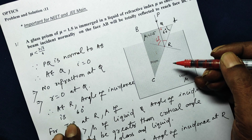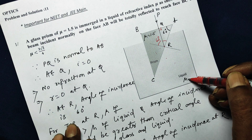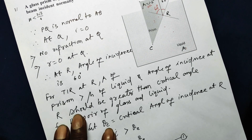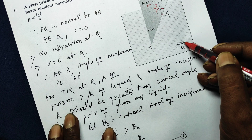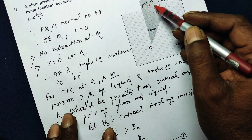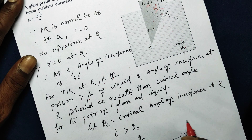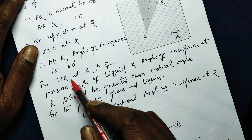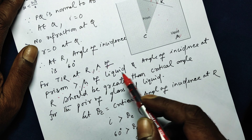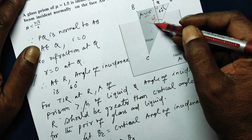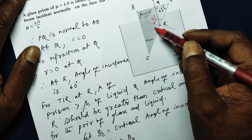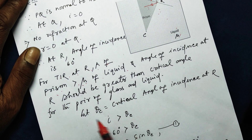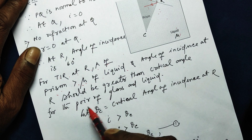Total internal reflection takes place when light goes from a denser medium to a rarer medium. Therefore the value of μ of the liquid should be less than 1.5. For TIR at R, the μ of the prism (1.5) should be greater than the μ of the liquid, and the angle of incidence at R should be greater than the critical angle θ_c for this pair — then it will be totally internally reflected.